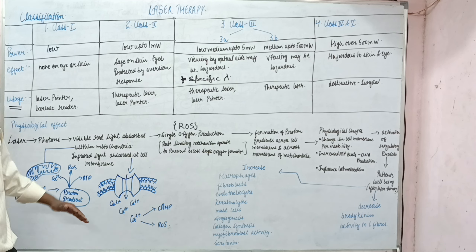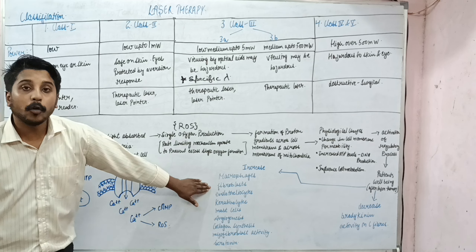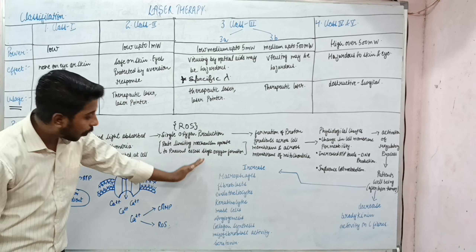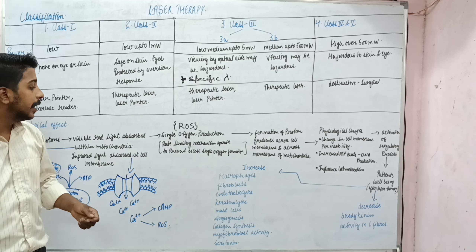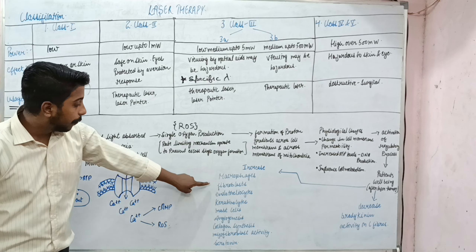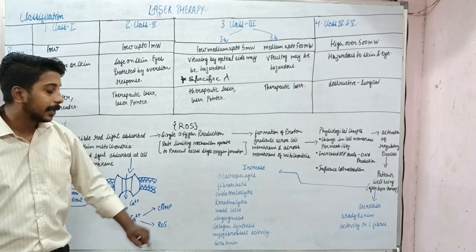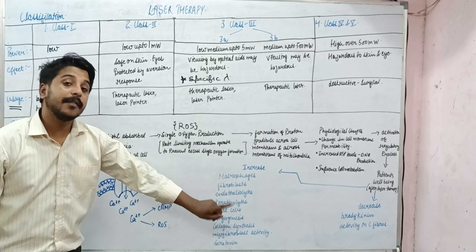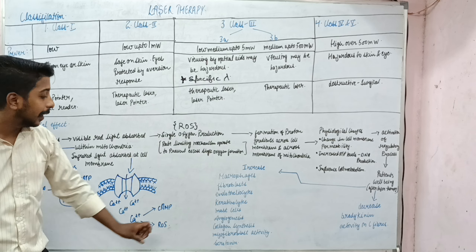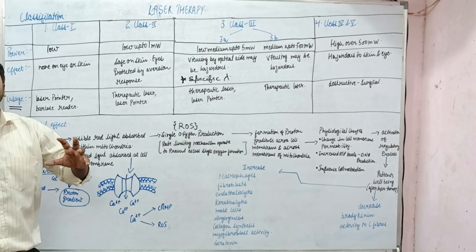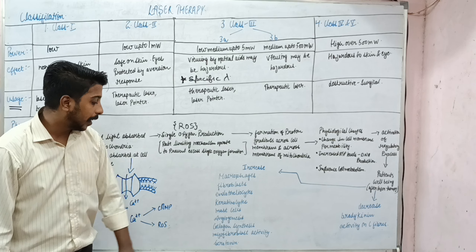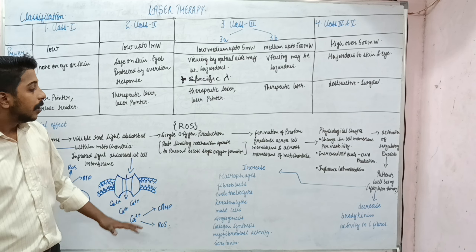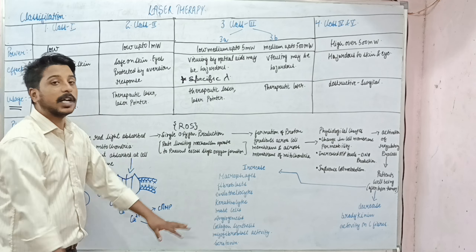These physiological changes lead to an increase in the activity of macrophages and fibroblasts. Fibroblasts produce a lot of collagen, which is important for repair. Macrophages are activated, fibroblasts are stimulated to produce collagen, endotheliocytes and keratinocytes are stimulated, mast cells are activated, and angiogenesis — the formation of new blood vessels — occurs. This also includes collagen synthesis, myofibroblast activity, and serotonin formation.